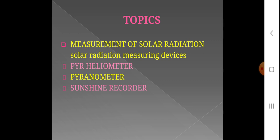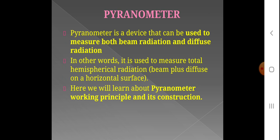Another device we will cover is the Sunshine Recorder as well. Right now, what is the pyranometer? It is a device used to measure solar radiation — specifically, beam radiation and diffused radiation, which together form what we call total global solar radiation, also called hemispherical radiation, as discussed in the first video.